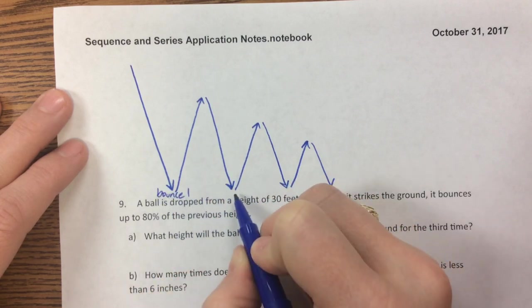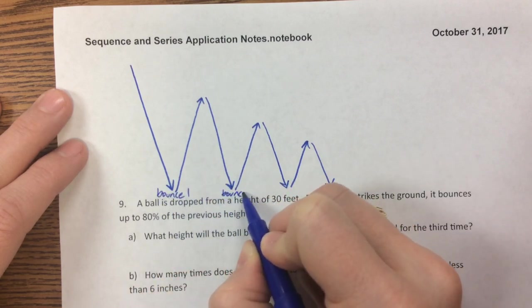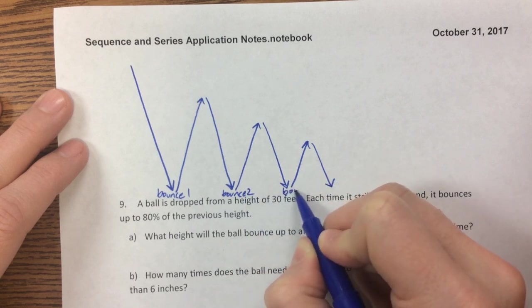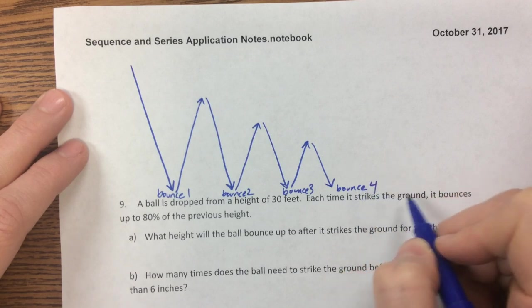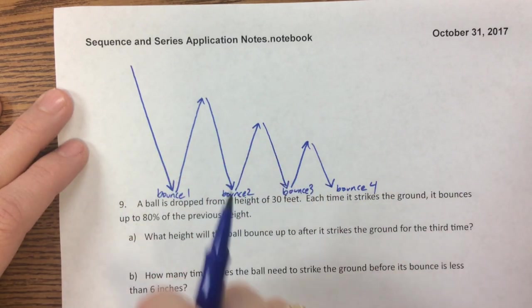So you'll notice this, we would say this is bounce one or the first time it falls. This is bounce two, this is bounce three, and here comes bounce four. Now I can draw out more of these, but I like to set it up so that I get a good enough idea of what's happening.